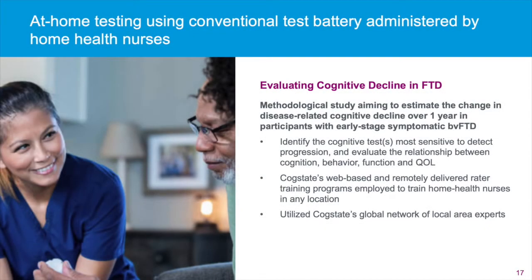Where site visits have been challenging for reasons of cognitive and behavioral impairment, and small patient populations spread over wide geographical areas, an approach to supervised at-home assessment using the visiting nurse model has been required. Both of these challenges are apparent when working with frontotemporal dementia populations. CogState's web-based and remotely delivered rater training programs can be employed to train home health nurses in any location, also making use of CogState's global network of local area experts. In this way, trial participants needing support and supervision can complete assessments in their own home, which can be an important component for successful recruitment and retention strategies.